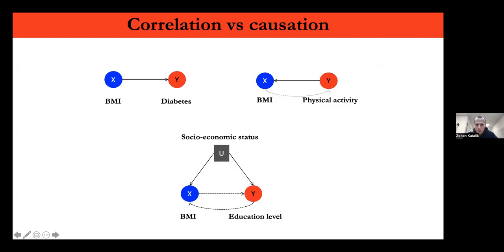In the case of Nobel Prize winners and chocolate consumption, the GDP of a country is a very important confounder — higher GDP allows more investment in research leading to more Nobel prizes, and also allows people to earn enough to spend more on luxury products like chocolate. So there is no causal relationship in either direction, just a confounding factor leading to a high correlation between the two.